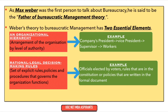The second essential element is rational legal decision making rules, which is the set of explicit rules, policies and procedures that govern organizational functions like planning, organizing, staffing, leading and control. Examples include officials elected by authorities, rules in the constitution, or policies written in formal documents. These were the two essential elements described by Weber in his bureaucratic management theory.